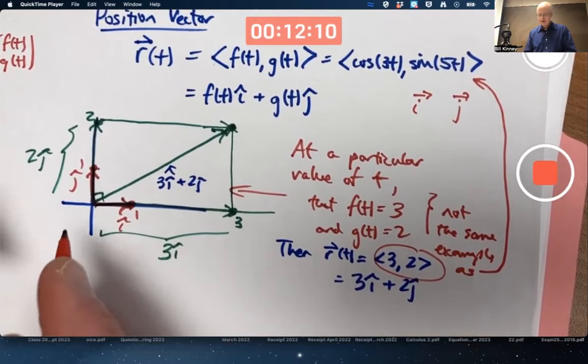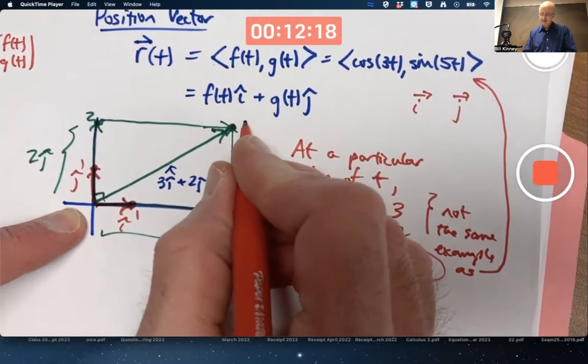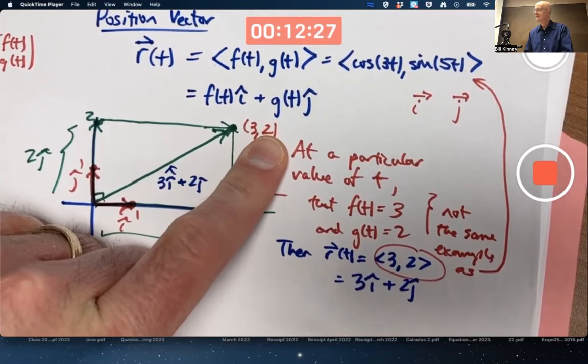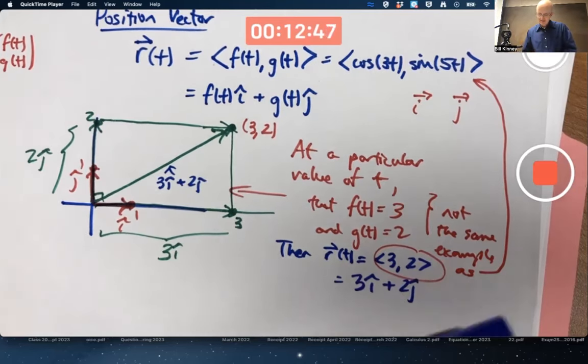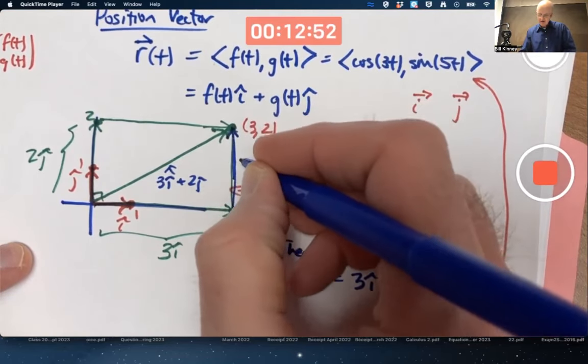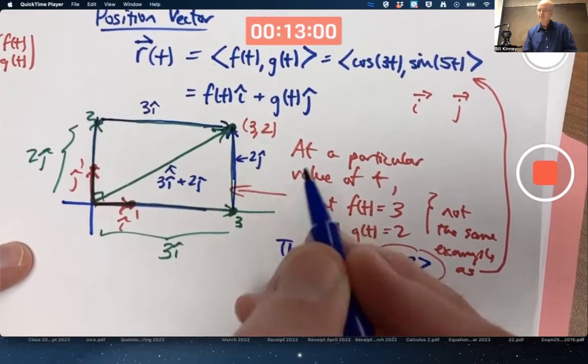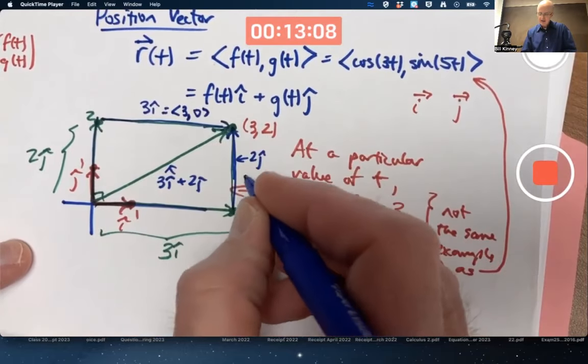If at a particular value of t, f of t is 3 and g of t is 2, then the vector r of t is going to have components (3,2), and in i hat, j hat notation, that's 3 times i hat plus 2 times j hat. What you want to imagine is taking i hat and scaling it up by a factor of 3 to be 3 times as long. That's 3i hat, and this point here has coordinate x equals 3.